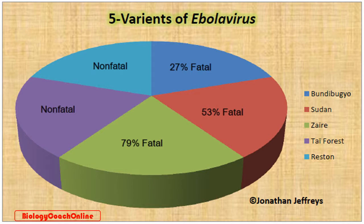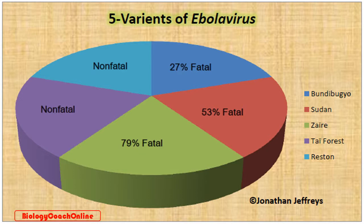We have the Sudan variant, SUDV — Sudan virus — that's 53% fatal to humans. And finally, we have the Zaire Ebola virus, simply referred to as EBOV. EBOV is the most dangerous of the Ebola virus disease-causing variants, as it is responsible for the greatest number of human deaths — it's 79% fatal in humans. For this reason, we use the acronym EBOV to refer to this particular variant, the Zaire variant, in the remainder of this course.